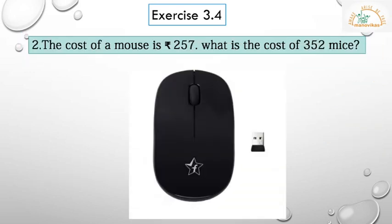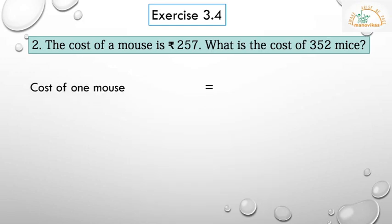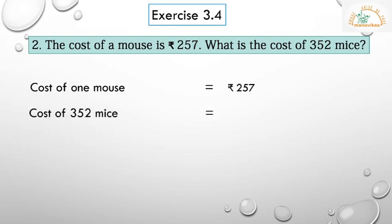Question 2: The cost of a mouse is rupees 257. What is the cost of 352 mice? The cost of one mouse is rupees 257 and they are asking us to find the cost of 352 mice. Here we are multiplying to get the answer. Cost of one mouse is equal to rupees 257. Cost of 352 mice is equal to rupees 257 multiplied by 352.